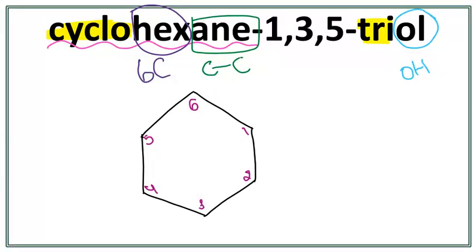We see tri- here. This means we have three OH groups present. One of them is on the first carbon, the second one is on the third carbon, and the third one is on the fifth carbon.